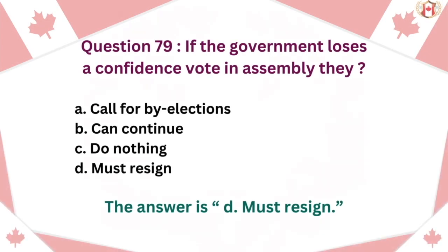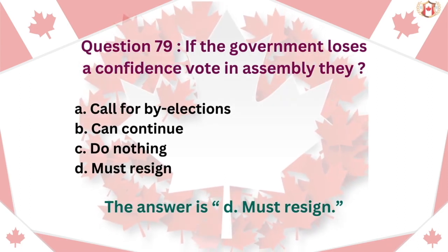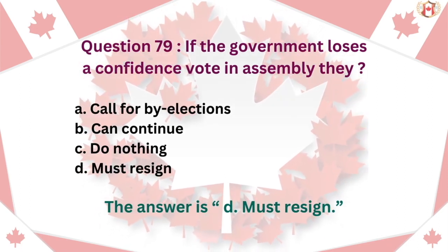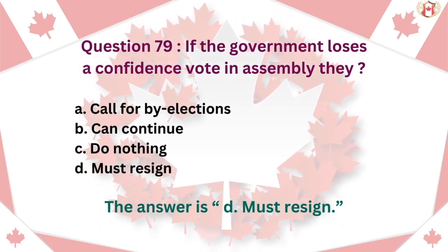Question 79: If the government loses a confidence vote in assembly, they must: A. Call for by-elections, B. Can continue, C. Do nothing, D. Must resign. The answer is D. Must resign.